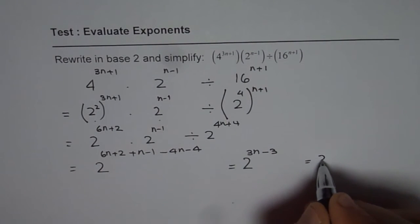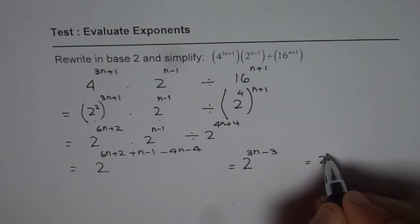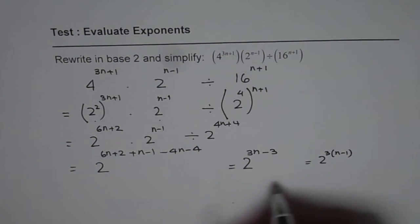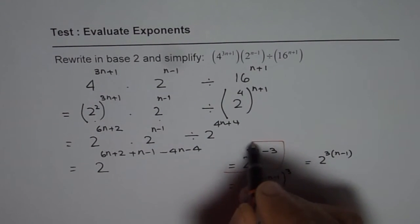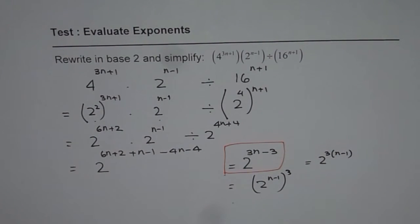What I'm trying to say is you could write this as 2 to the power of 3 times n minus 1, so it could be n minus 1 whole cube. But still I feel this is the lowest term. So that could be your answer. There is no need to go to these two steps.